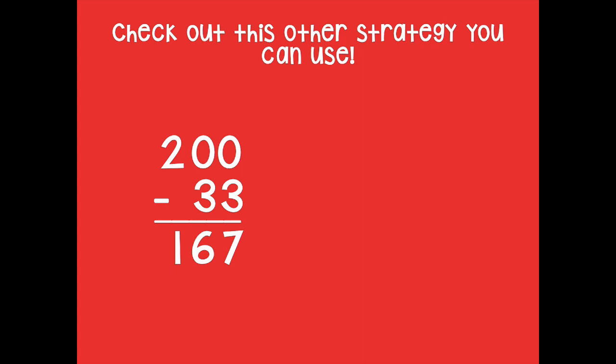Okay, so if I have 200, I know that I can't subtract 33 from that, right, because I have the zeros in the ones and the tens place. So another strategy you can use is subtracting 1 from the large number. So if I have 200 minus 1, that leaves me with 199.